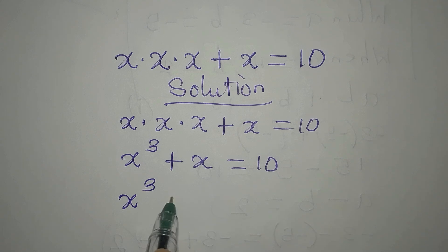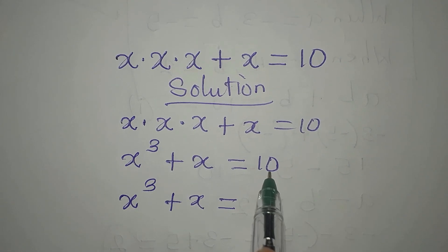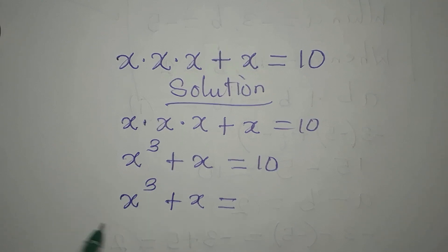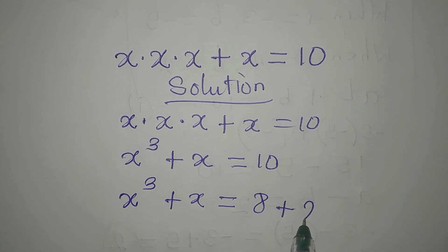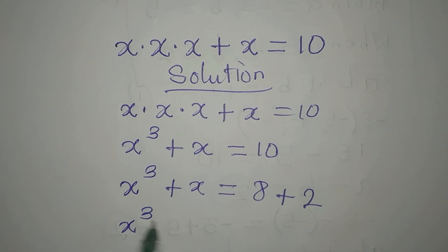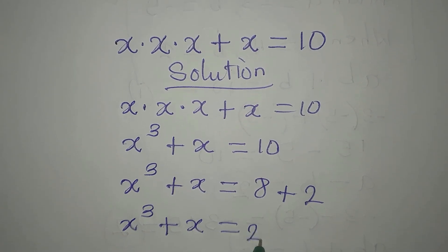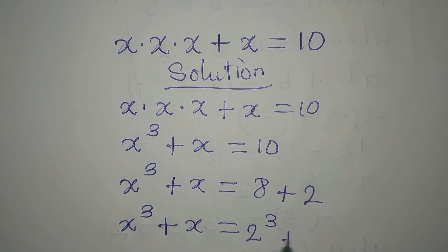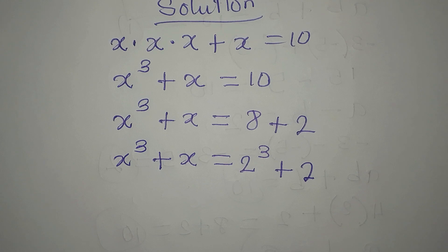We have X to the power of 3 plus X. Let me pick a number from 10 that can be expressed as a perfect cube. That number is 8, so I need 2 more. X³ + X will now mirror 8 plus 2, where 8 is 2 to the power of 3, plus 2. The left-hand side and right-hand side are now in the same form.